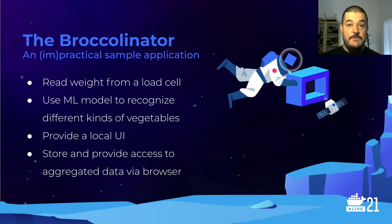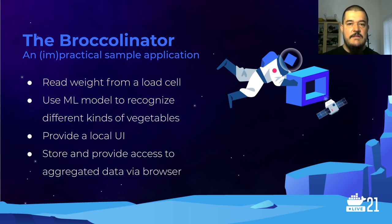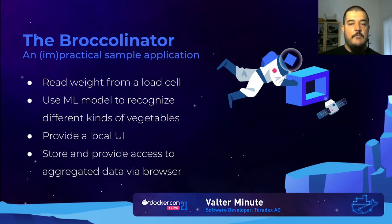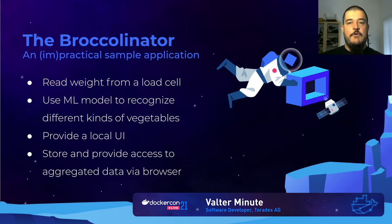Even in this simple scenario there are quite some challenges. We need to access the hardware to get weight from the scale, use machine learning and computer vision to recognize different vegetables, provide a local user interface since you typically won't access these devices via browser, and also provide a web UI to show aggregated data — for example, how many broccoli or other vegetables were weighed during the day and what the average weight is.